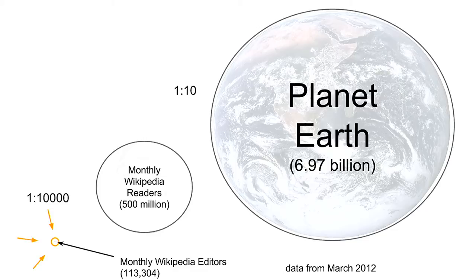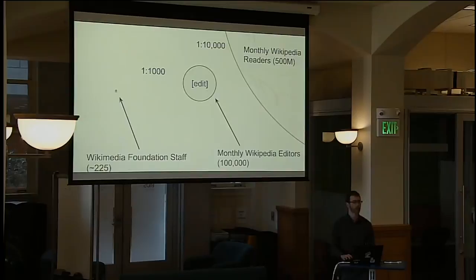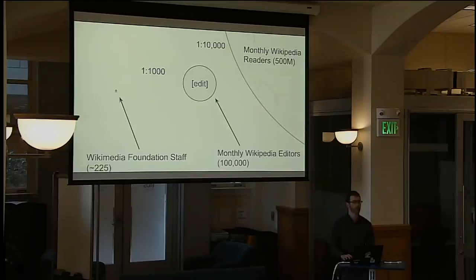There's actually a dot on the slide representing the editors — it's one pixel and it's way too big. I still had to circle it so you could see there is in fact a dot there. The Wikimedia Foundation, the company I work for, is yet substantially smaller — about 200 to 230 of us, depending on whether you count contractors and part-time workers.